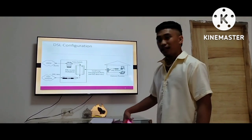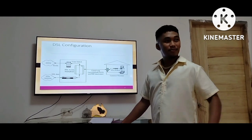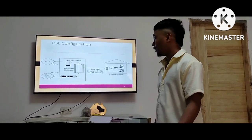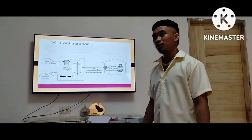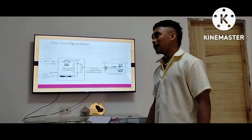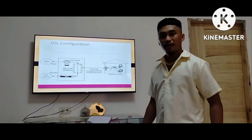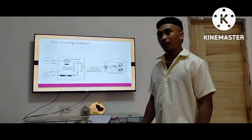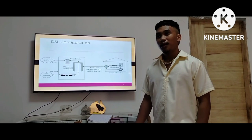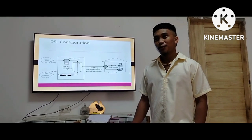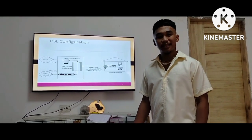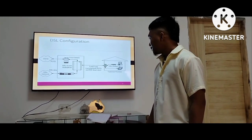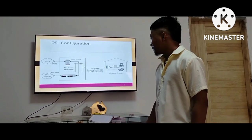DSL permits the twisted pair to support data traffic and voice traffic simultaneously. Here are the examples of DSL. A DSL separates the two main components of internet — you can use the internet while you're calling someone or using the telephone. That's all.